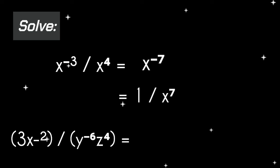Next: the quantity of 3x raised to the power of negative 2, over the quantity of y raised to the power of negative 6 times z raised to the power of 4. To deal with the many negative exponents, just separate the terms with negative exponents, as stated in the negative power rule. The final answer is 3y raised to the power of 6 over x squared z raised to the power of 4.